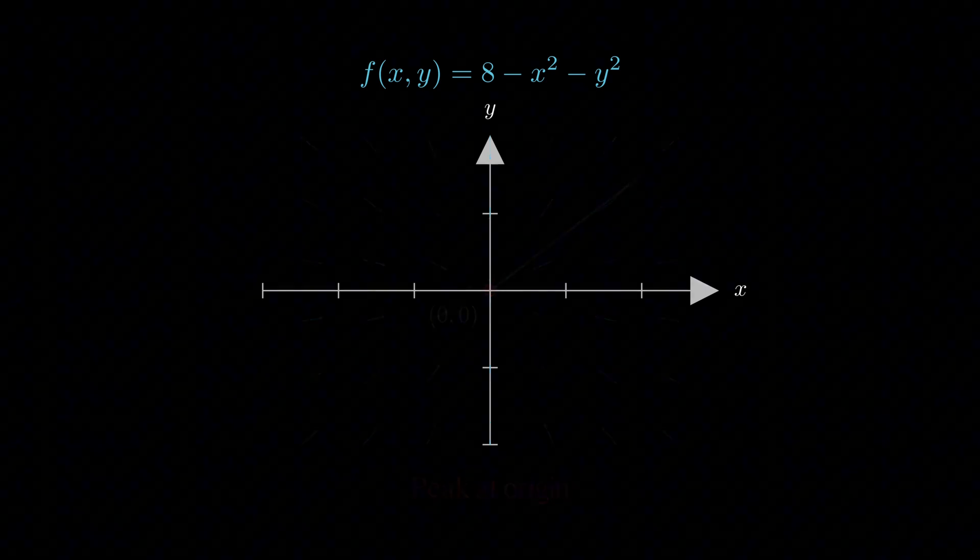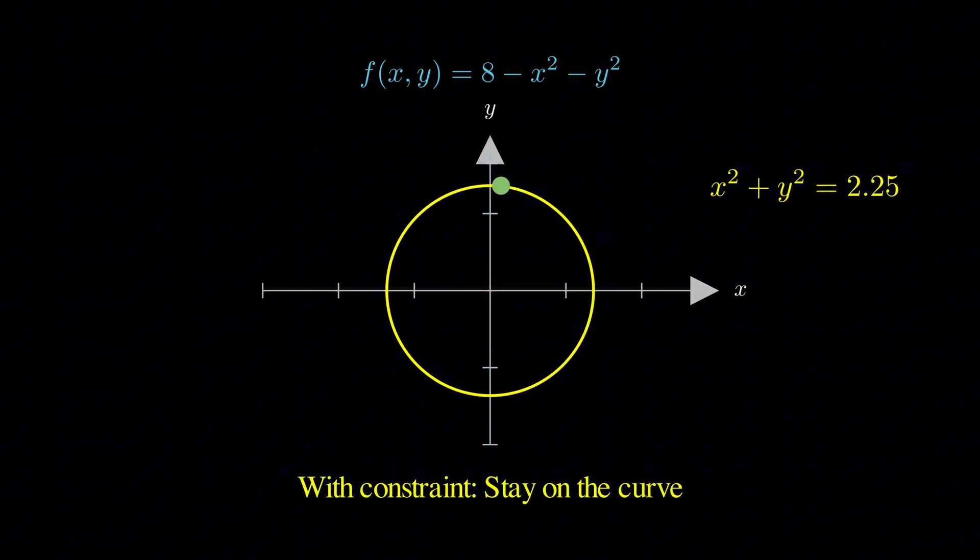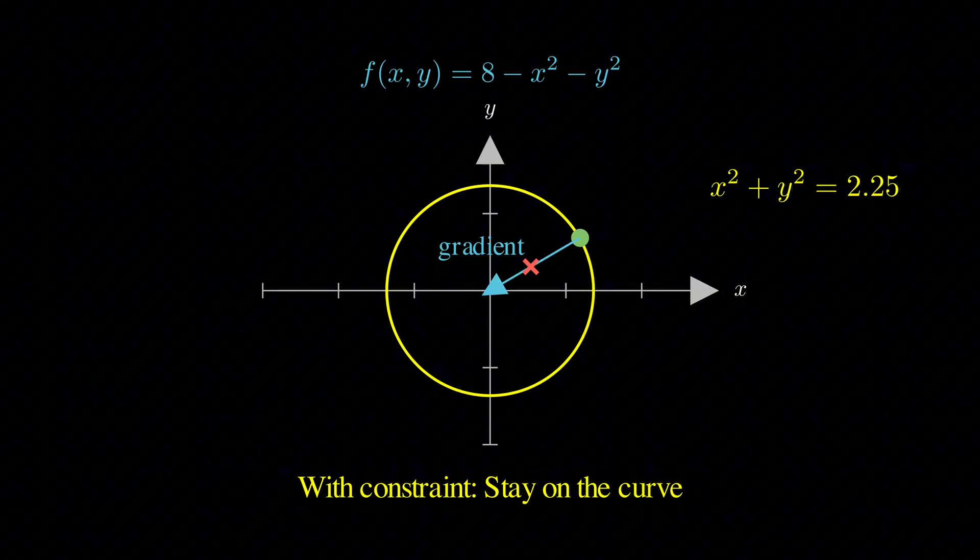But now let's bring back our constraint. We have to stay on this yellow circle defined by x squared plus y squared equals 2.25. This changes everything because now we can't just follow the gradient wherever it wants to take us. Watch what happens when we try to move along the constraint. At most points, the gradient is trying to pull us off the curve, but we can't follow it because we're stuck on our circular path.